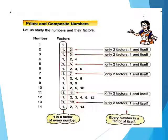Number 8: the factors are 1, 2, 4 and 8. Number 9: the factors are 1, 3 and 9. Number 10: the factors are 1, 2, 5 and 10. Number 11: the factors are 1 and 11. Number 12: the factors are 1, 2, 3, 4, 6 and 12. Number 13: the factors are 1 and 13. Number 14: the factors are 1, 2, 7 and 14.